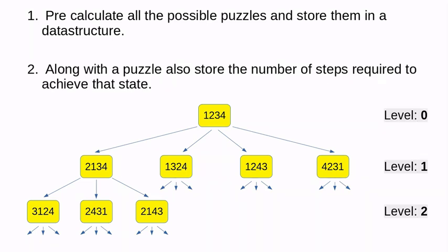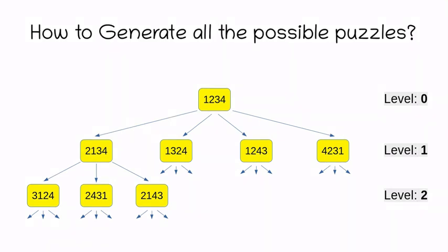Secondly, along with all the possible combinations, you have to save the number of steps required to achieve that state. Just for the sake of example, I am using here only four digits: 1, 2, 3, and 4. But in actual programming you will be using nine digits as given in the question. If you are able to do these two things, believe me, the problem is solved. But the question arises: how are you going to generate all these possible puzzles? And the answer to this question lies in an algorithm known as breadth-first search.